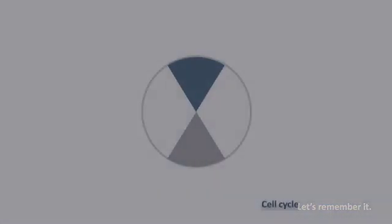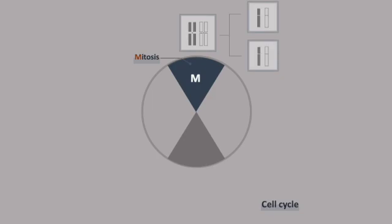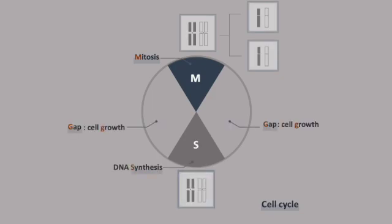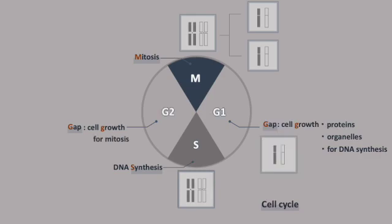Let's remember it. The opposite side of mitosis, a cell has DNA synthesis. Between them, we have two gaps. Cell growth for DNA synthesis is called G1. For mitosis is called G2. G0 is the resting phase.